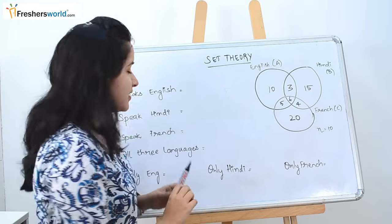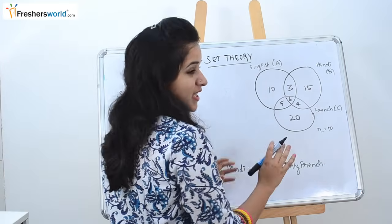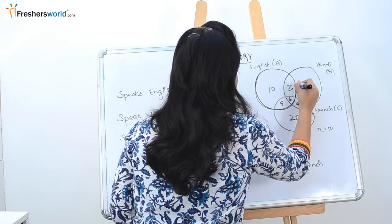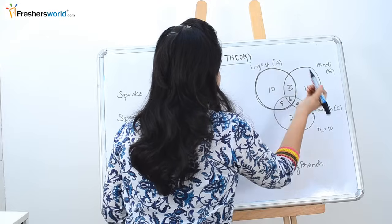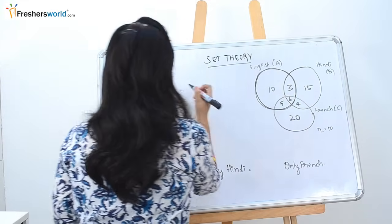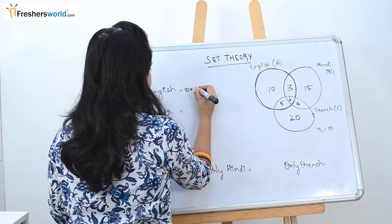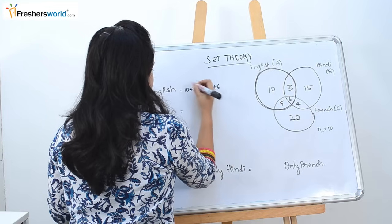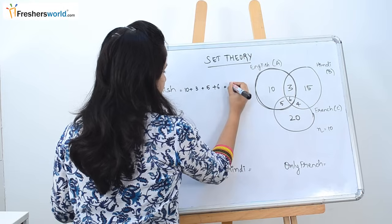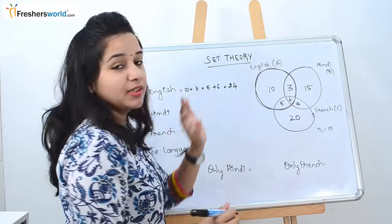The first question they are asking is: what is the number of people who speak English? If you see English, this whole circle comes under English. So we will take it as 10 plus 3 plus 5 plus 6. So 10 plus 3 is 13, plus 5 is 18, plus 6 is 24. The number of people speaking English is 24.